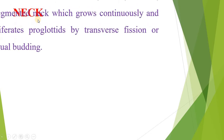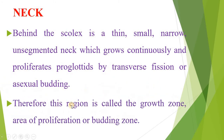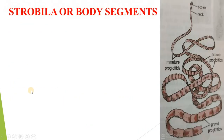Next is the neck. Behind the scolex is a thin, narrow, unsegmented neck which grows continuously and proliferates proglottids by transverse fission or asexual budding. Therefore this region is called the growth zone, area of proliferation, or budding zone.